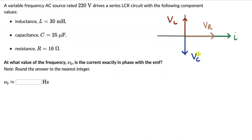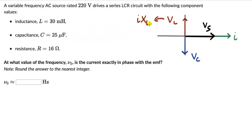The question says the current is exactly in phase with the EMF, meaning there is no phase difference between the supply voltage and the current. So the supply voltage should lie in the same direction as the current. This is only possible if VL is exactly equal to VC — if these two cancel each other out. That means the voltage across the inductor equals the voltage across the capacitor: I×XL = I×XC.